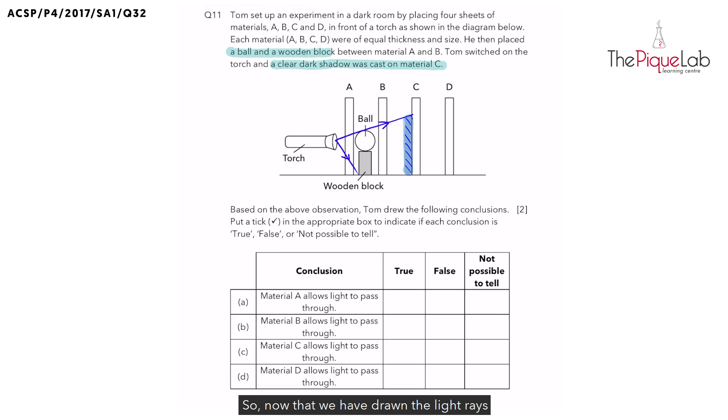Now that we have drawn the light rays, it is obvious that we can see which materials allow light to pass through and which material does not. Since we are able to cast a shadow on material C, that means material C is able to block light, thus material C does not allow light to pass through.